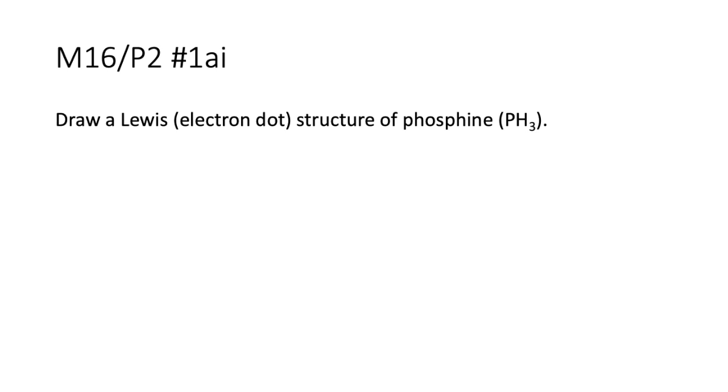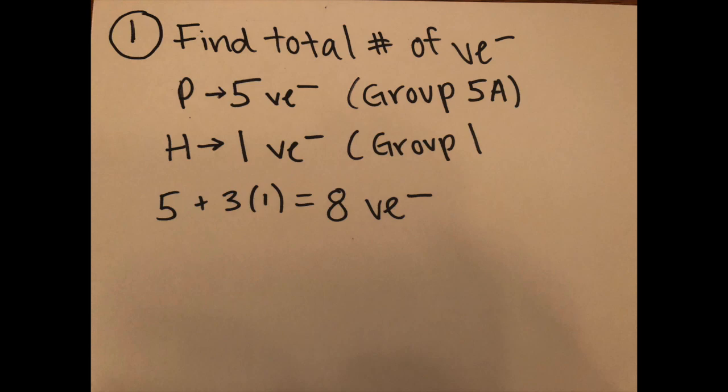And so the first example that we're going to look at is May 2016 paper two question number one part a part i and it says draw Lewis electron dot structure of phosphine.